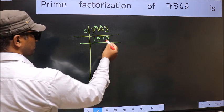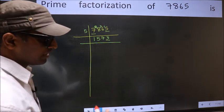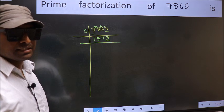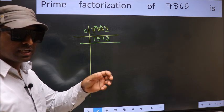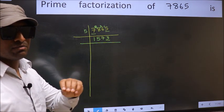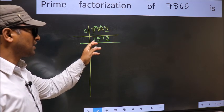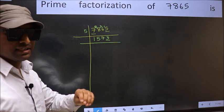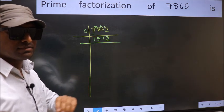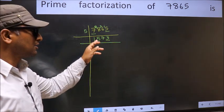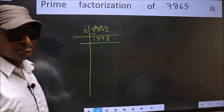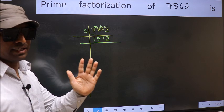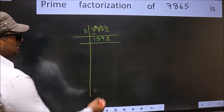Now for 1573: the last digit is three, not even, so it is not divisible by two. Next prime number three — to check divisibility by three, we add the digits: one plus five plus seven plus three equals 16, and 16 is not divisible by three, so this number is not divisible by three. Next prime number five — the last digit is neither zero nor five, so this is not divisible by five.